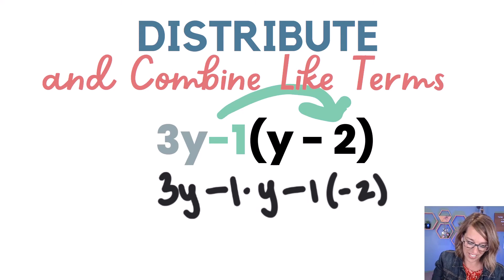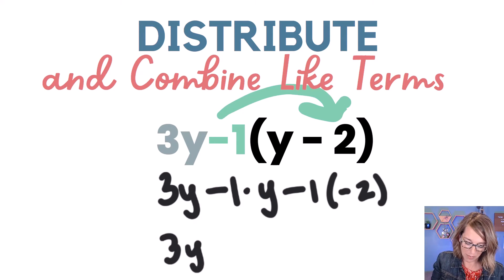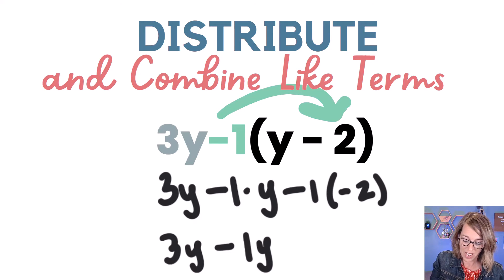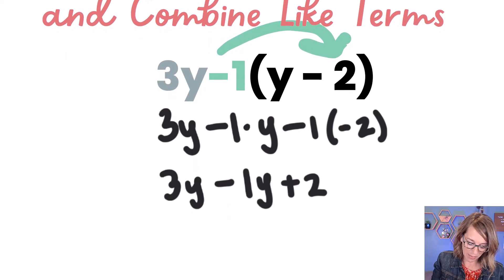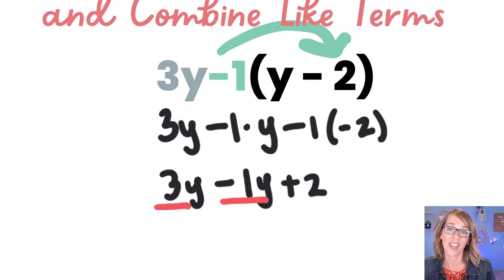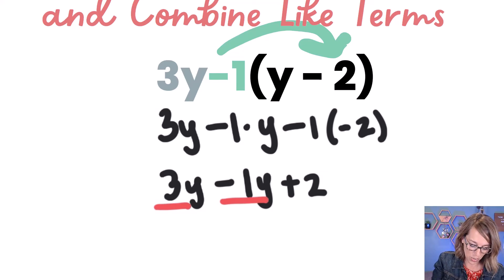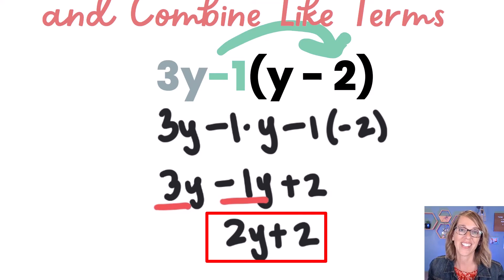Let's go ahead and simplify. I still have that three y out in front. Negative one times y I can write as negative y. And then negative one times negative two is positive two. Now I can combine some like terms. I've got three y's and I'm subtracting one, so I can do three minus one, which leaves me with two y's. So I've got two y plus two. And that's our simplified answer.